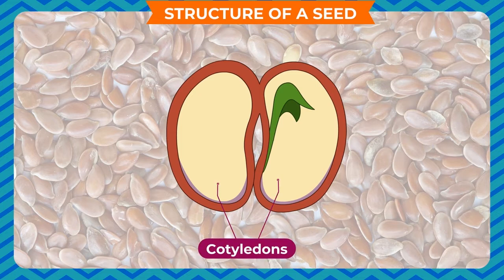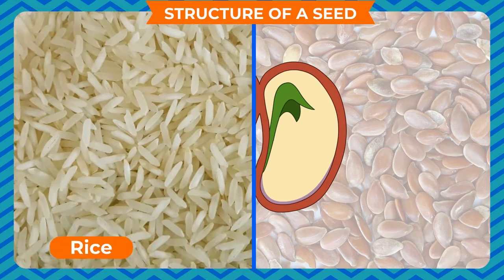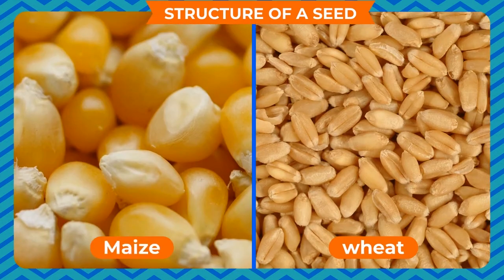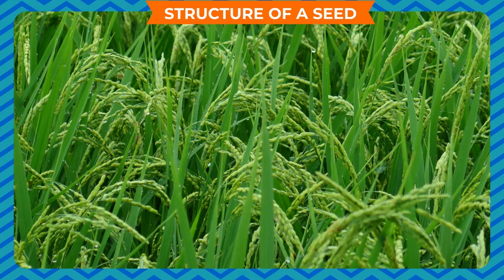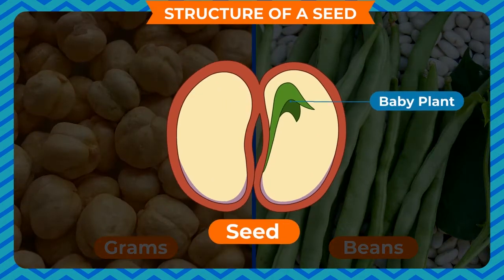The cotyledons cover the baby plant between them. The baby plant inside the cotyledons is known as the embryo. The leaves of the seed store food in them, and the baby plant uses this food to grow until it produces its own leaves. Some seeds like rice, wheat, and maize that belong to the grass family have only one seed leaf, whereas seeds like peas, beans, and grams have two seed leaves.